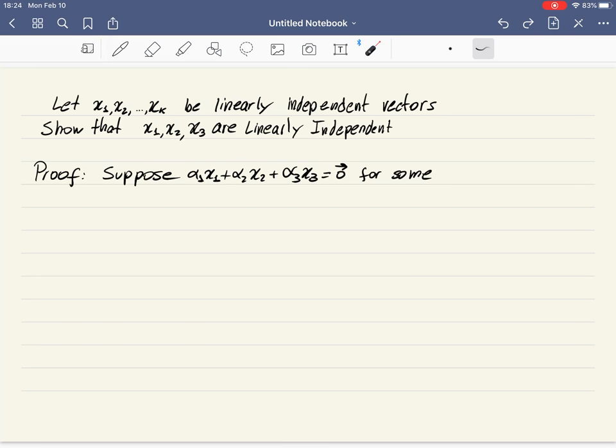So there's a linear combination, and here we say for some numbers alpha one, alpha two, and alpha three. 'Some' here is a logical quantifier. It just says there exists alpha one, alpha two, alpha three like this, and then we are going to say something about these alpha one, alpha two, alpha three. We're going to show that they are zero.